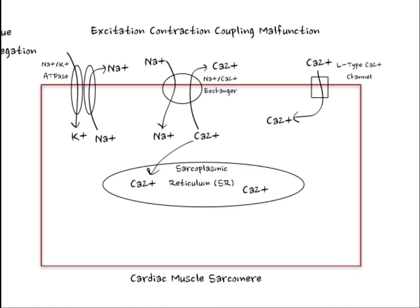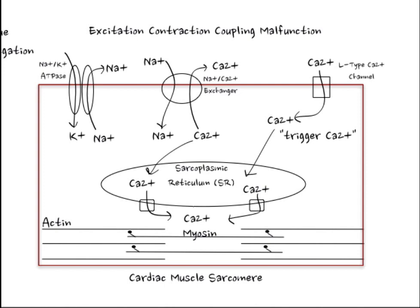Within the sarcomere is the sarcoplasmic reticulum, which serves to store calcium for use during contraction. In normal excitation-contraction coupling, excitation of the neuron activates L-type calcium channels to let in a small amount of trigger calcium. This trigger calcium enters the sarcoplasmic reticulum, activating the release of calcium through ryanodine receptors. That cytoplasmic calcium binds to the actin complex causing a conformational change that allows myosin heads to bind to actin and cause contraction of the heart muscle.